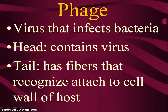These are different shapes and structures of the various types of viruses. A phage, or bacteriophage, is a virus that infects bacteria. The head of the phage contains the viral genome, and the tail has fibers that recognize and attach to the cell wall of the host. The tail contracts and injects a hollow tube into the cell, where the viral nucleic acid enters and initiates the viral infection.